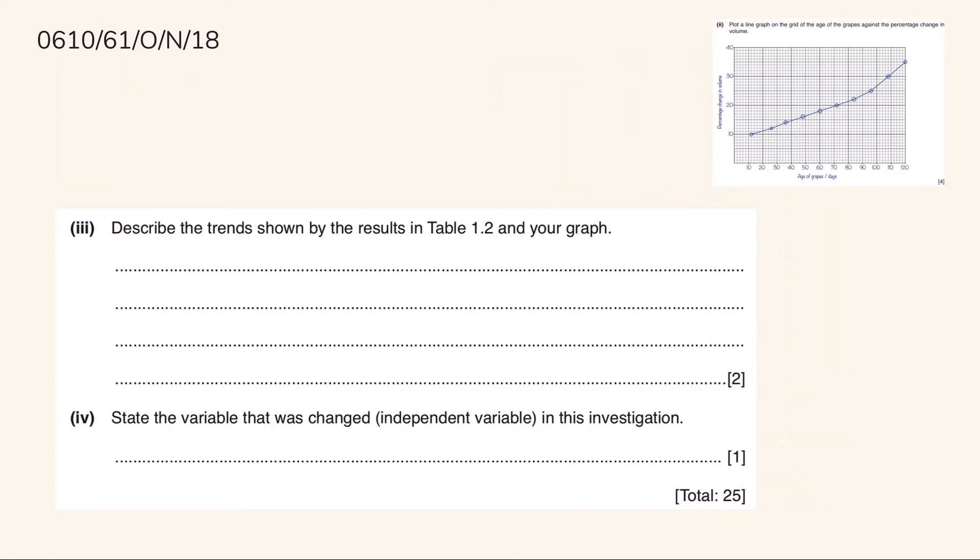Now, in Part 3, it says to describe the trends shown by the results in Table 1.2 and your graph. So it is shown in the graph that when the age of the grapes increase, the percentage change in volume also increase. So let's write that. Another point is that from 12 to 81 days, the aged grapes increase the volume by 2%. So let's also write that.